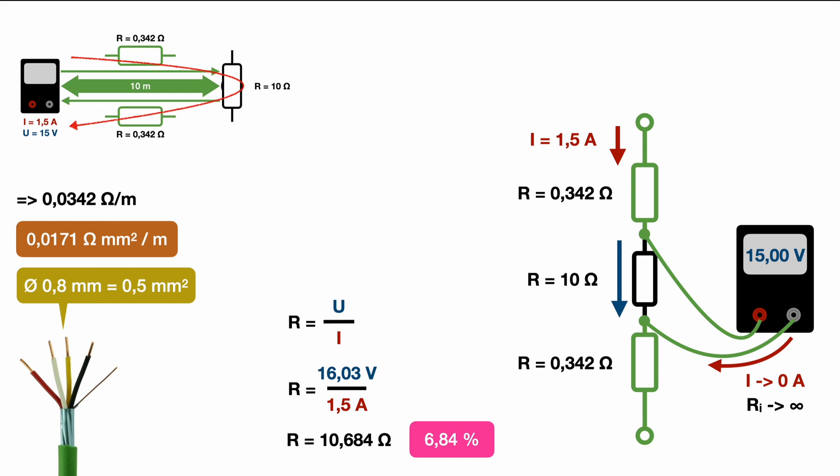We need this defined 1.5 amp measurement current to be able to calculate towards the resistance. But in case we use two wires to supply the resistor with this measurement current of 1.5 amps and we use two more wires to measure the voltage, we don't have any current flowing through those additional measurement lines we're using to measure the voltage drop. And that's the whole clue about the difference. That's the whole clue why the four wire technique is so much more precise.